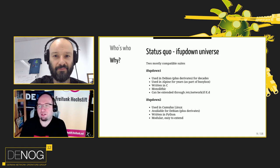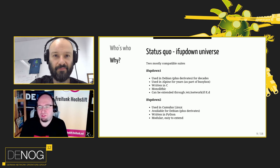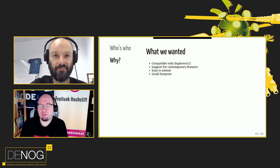We tried to focus on the ifupdown universe. There are mainly two compatible suites: classical ifupdown one from Debian and derivatives, and then the version from Alpine which is nearly the same, part of BusyBox, written in C, monolithic, extendable through scripts via the /etc/network/if-pre-up, post-up directory mechanism, but hard to extend in a nice way. Then there is ifupdown two from the Cumulus folks, available for Debian, written in Python and easy to extend. What do we want? Something compatible with ifupdown one and two as a drop-in-ish replacement, with support for contemporary features, easy to extend, and a small footprint.